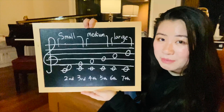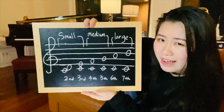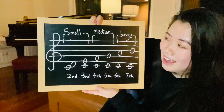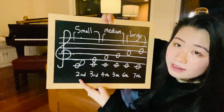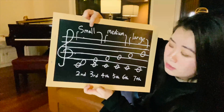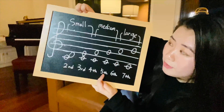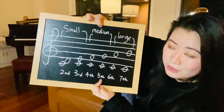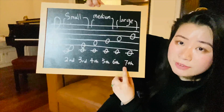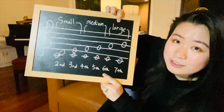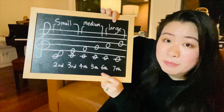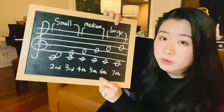The strategy I'm proposing is to divide these six into three different categories. The second and the third are small intervals. The fourth and the fifth are medium intervals. And the sixth and the seventh are large intervals. You're probably thinking, yeah, duh, thanks. But I promise this will help you later.